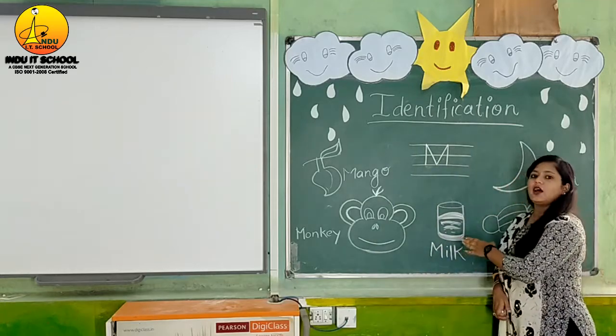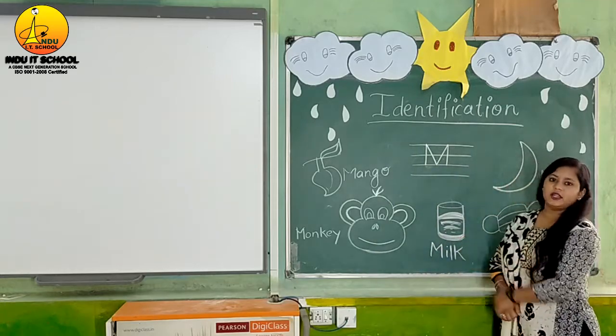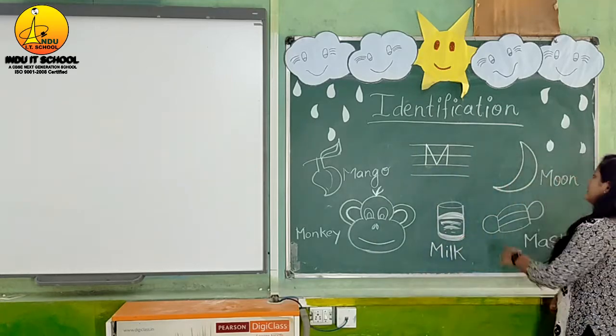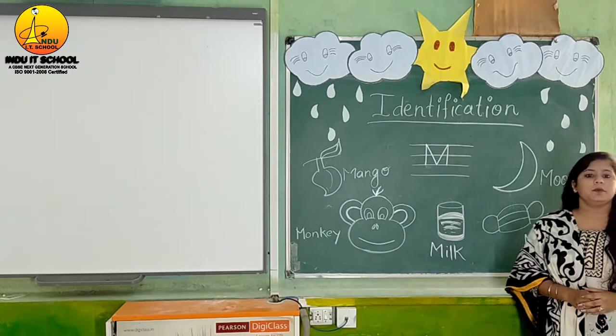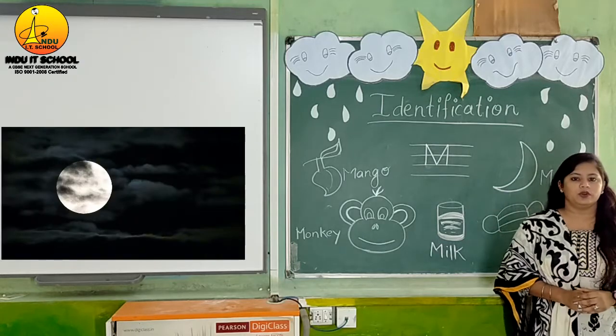What is the color of milk? White color. Next object is M for moon.